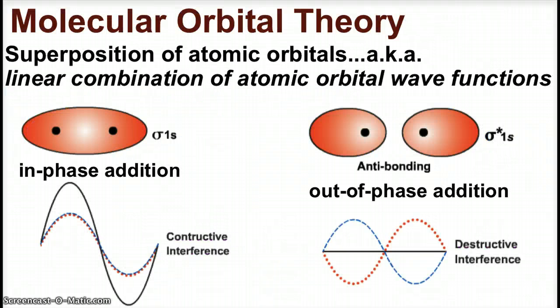Molecular orbital theory basically talks about the superposition of atomic orbitals. In other words, a linear combination of atomic orbital wave functions. Remember, all of this comes from the very complex solving of Schrodinger's equation. The mathematical solutions are the atomic orbitals. So when we take atoms and put them together to make molecules, we can have orbitals combining.